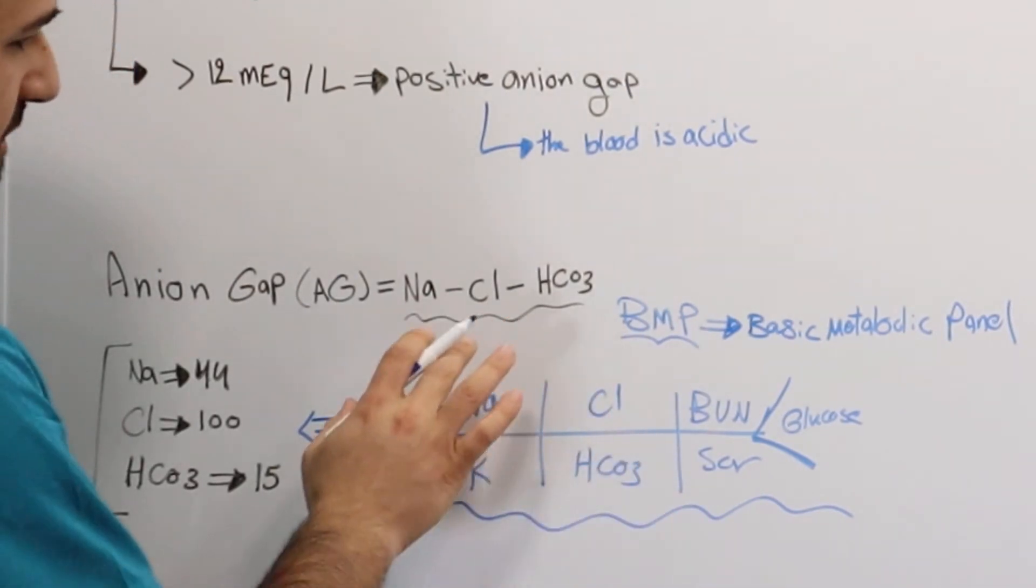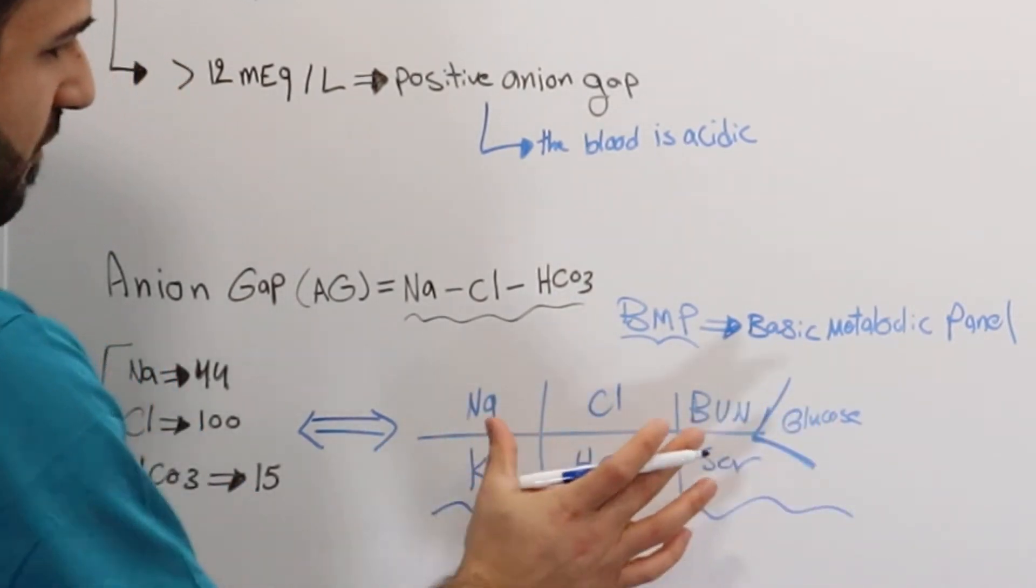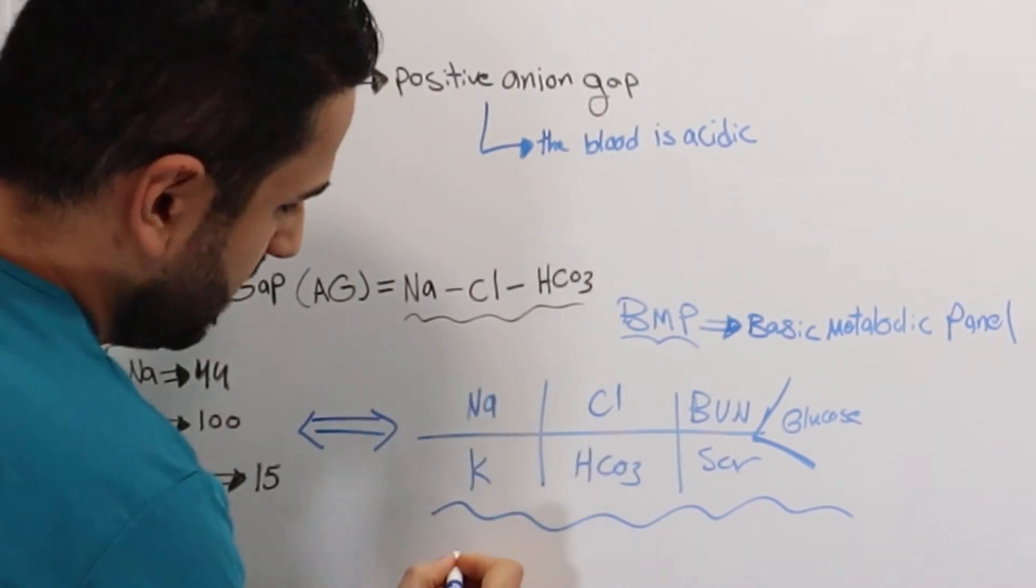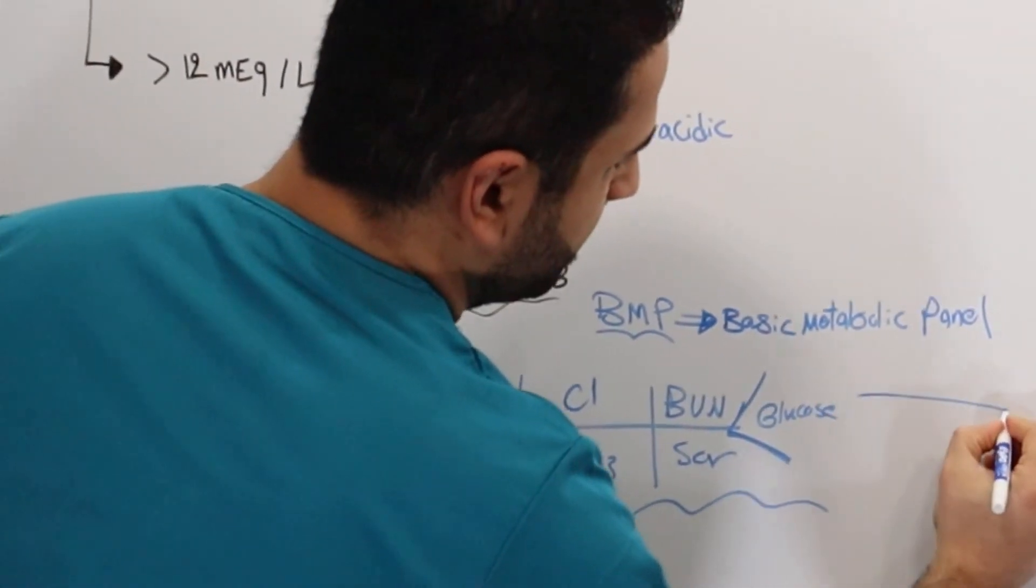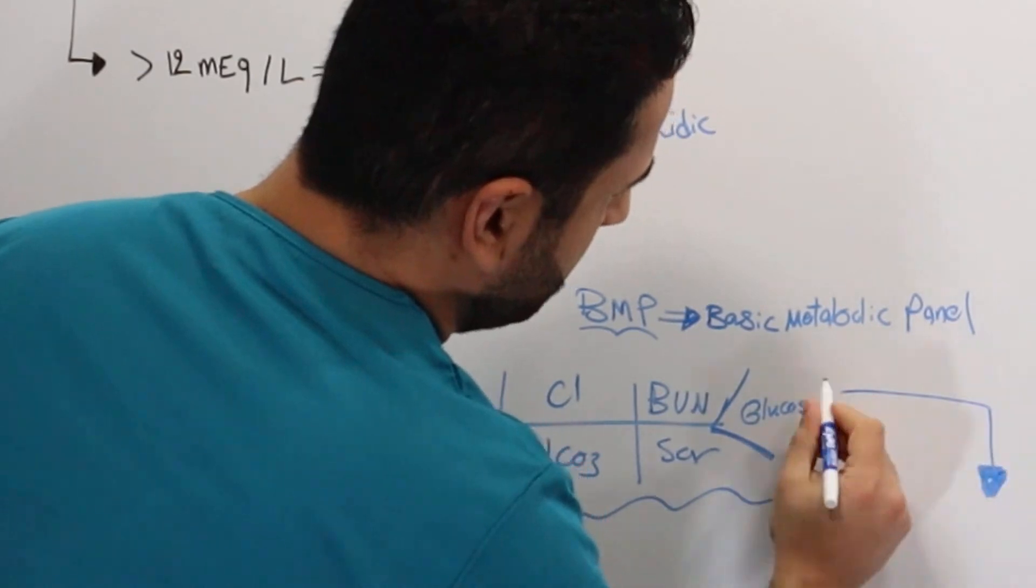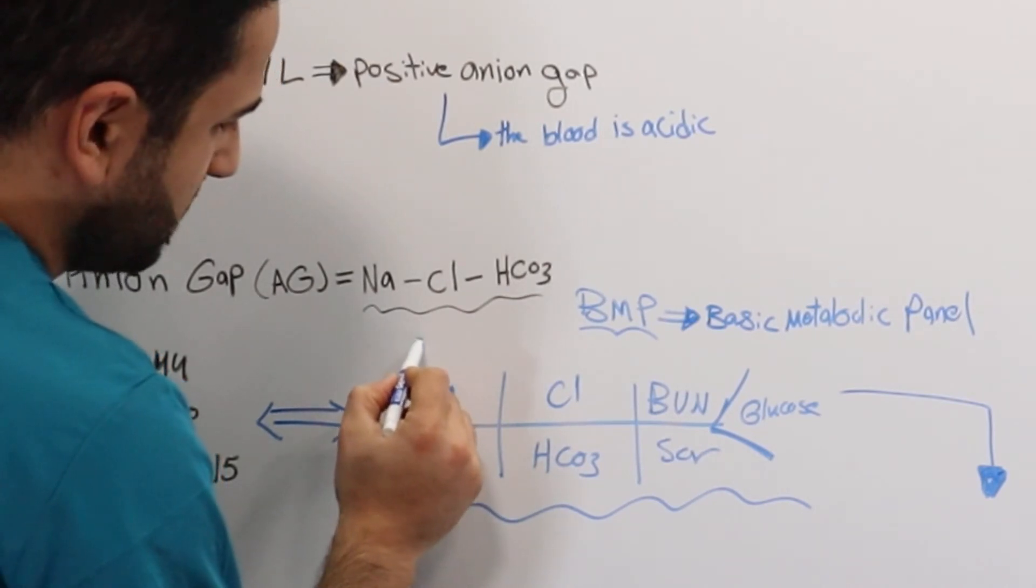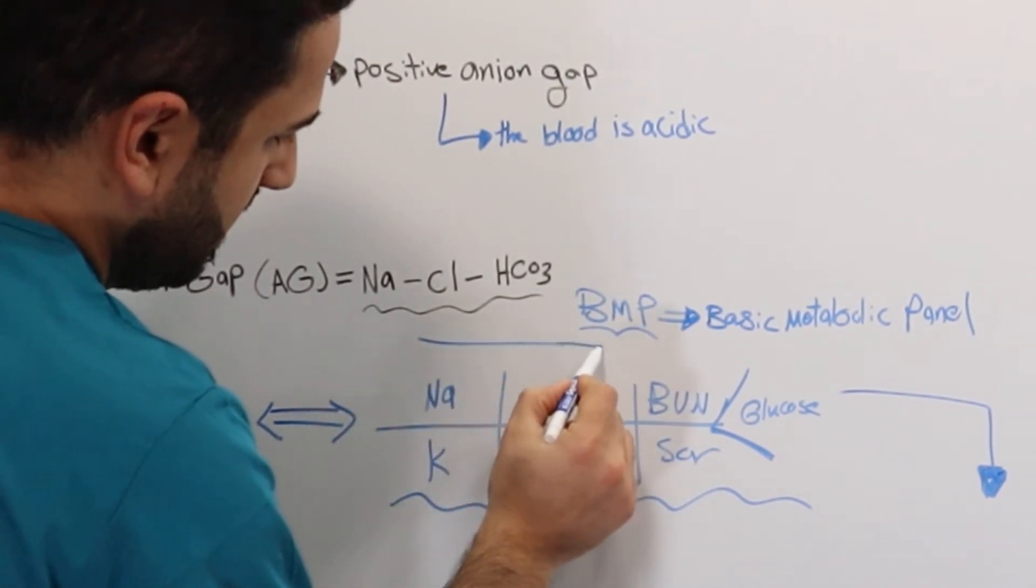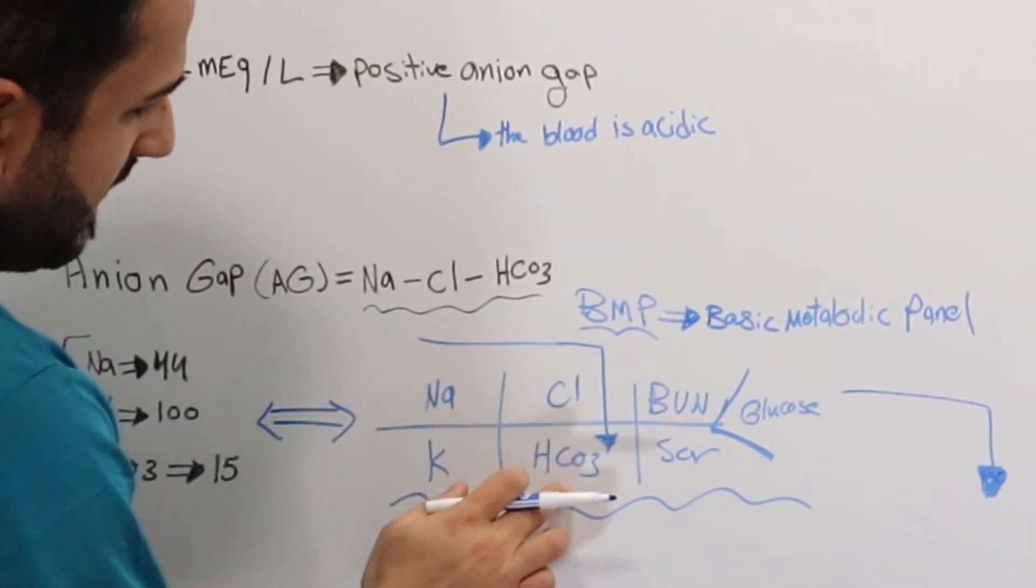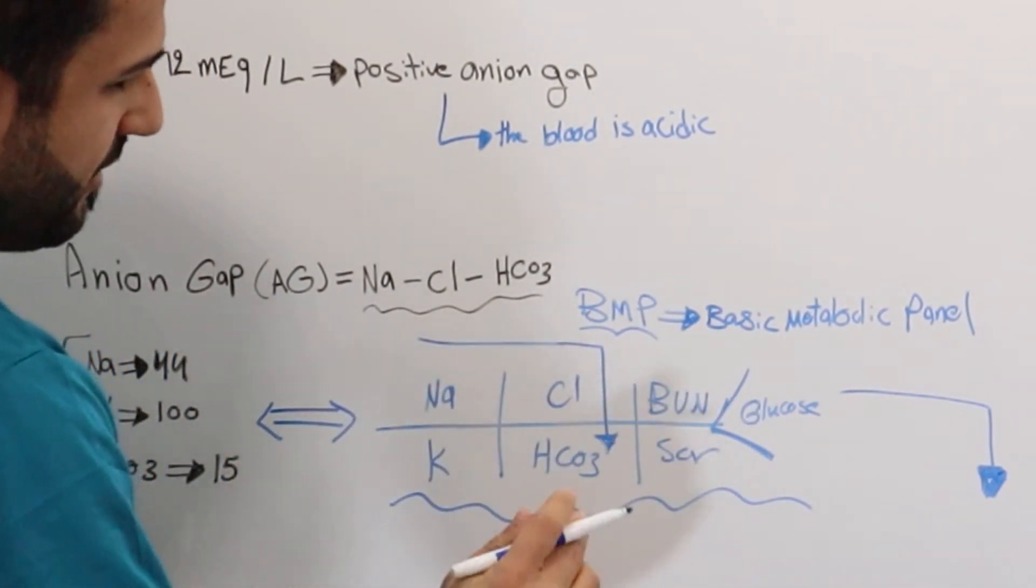And an easy way to remember the formula, if you can't remember the formula, basically during your test, if you have memorized this fishbone, the BMP, an easy way to remember how to calculate anion gap is very simple. Just remember this arrow. What does this arrow mean? Going this way and then going down. Basically what it means is sodium is here, right? So sodium minus chloride, going all the way to bicarbonate. Sodium minus chloride minus bicarbonate. That's what this arrow means. So if you can remember this fishbone and then remember this arrow, you're good to go.